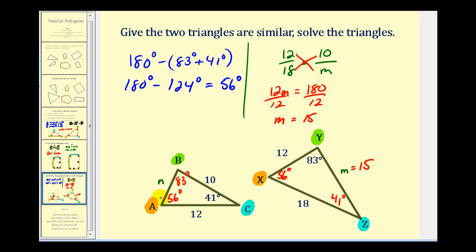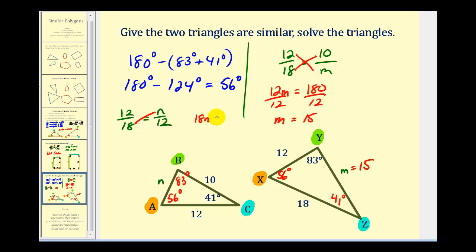Now we're left to determine the length of side AB, which we'll call N. Using the same ratio of 12 to 18, that must equal the ratio of N, the length of side AB, to the length of side XY, which is 12. Cross multiplying: 18N must equal 12 times 12, that's 144. Dividing by 18, N equals 8. Therefore the length of AB is equal to 8.